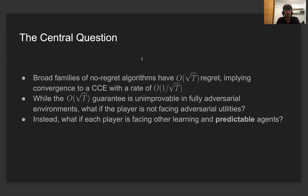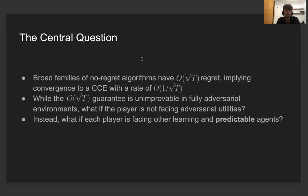Here is the central question. It is well known that there are broad families of no-regret algorithms, such as mirror descent, which have a square root of T regret, implying convergence to CCE at a rate of 1 over square root of T. While the square root of T guarantee is unimprovable in fully adversarial environments, in the problem of no-regret learning in games, the player is not really facing adversarial utilities. Instead, every player is competing against other potentially learning agents who themselves could be using some form of regularized learning, so it is natural to ask whether improved guarantees are possible.